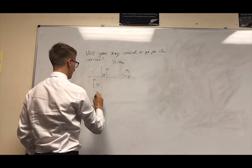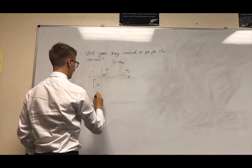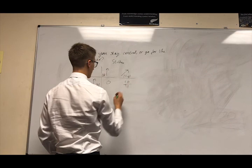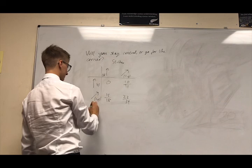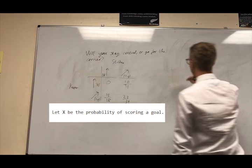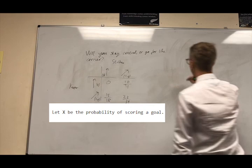We will assume that both players are equally wise. Therefore, the probability of the keeper staying straight is also p. Since there are only two options, the probability of either footballer aiming or diving to the corner will be 1-p. We define x to be a discrete random variable representing the probability of scoring a goal. Its probability distribution can be found from the matrix. We can calculate the expected value of x in terms of p using the formula shown, which tells us the average probability that a goal will be scored.